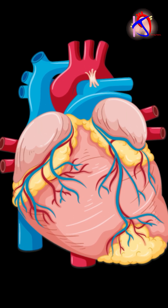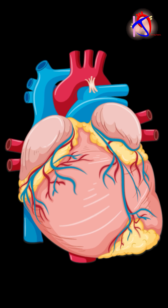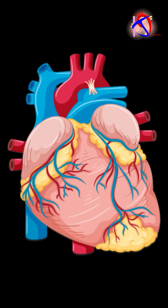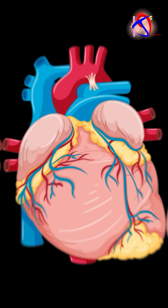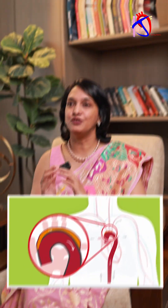The left ventricle is the most important chamber of the heart, because this is the one that has to pump blood to the entire body against so much pressure. And from there, it goes into the aorta.